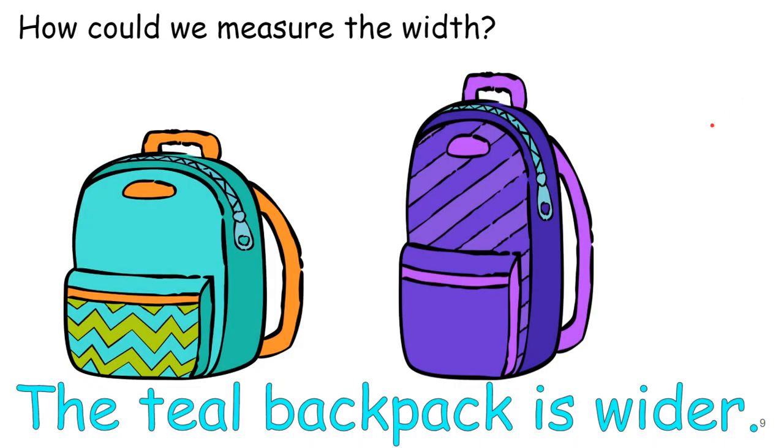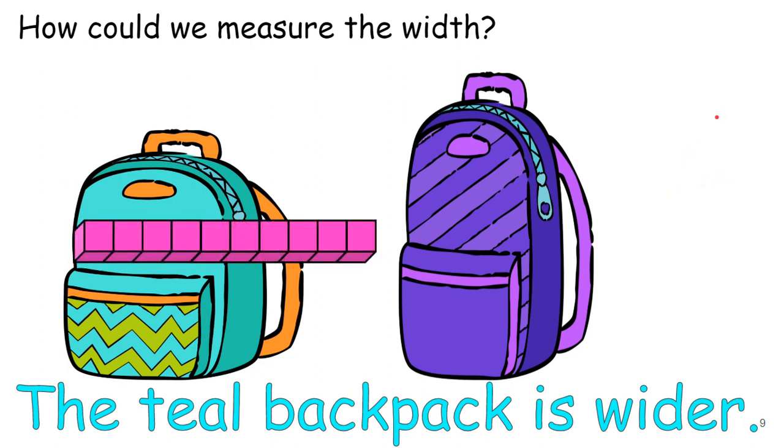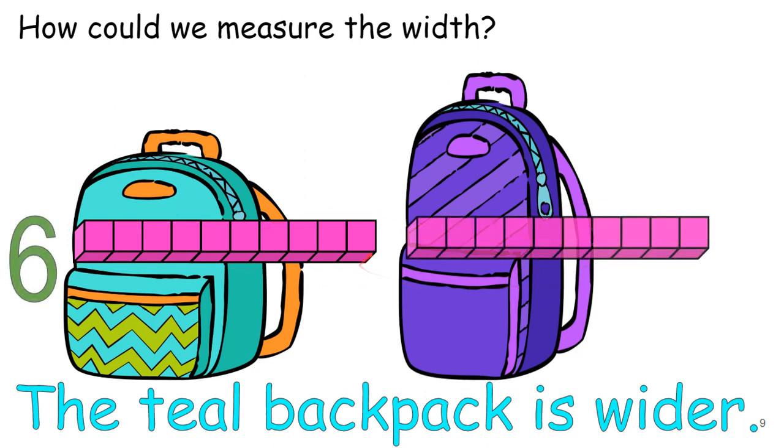But how can we actually measure the width just like we did with the height? So we want to actually get a number. Well, we can use our cube blocks again. So remember, I start at one side and go to the other. Now, I'm not going to include the strap because that's not really the part of the big part of the backpack. So let's count. One, two, three, four, five, six. Okay, let's check the purple one. Again, we're going to start on one side and go to the other. One, two, three, four, five.